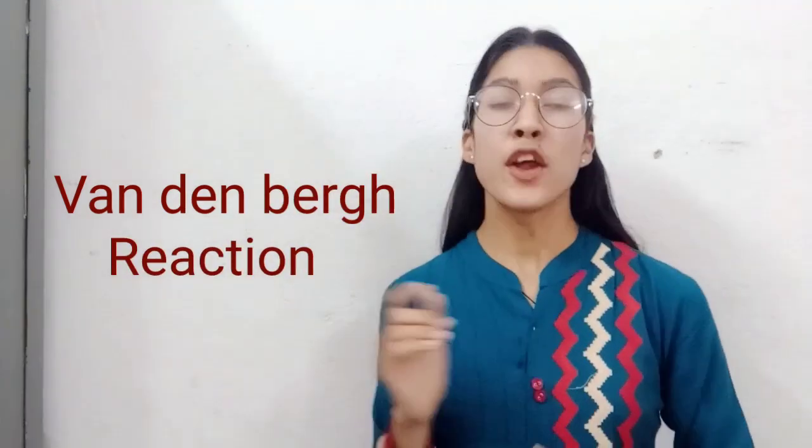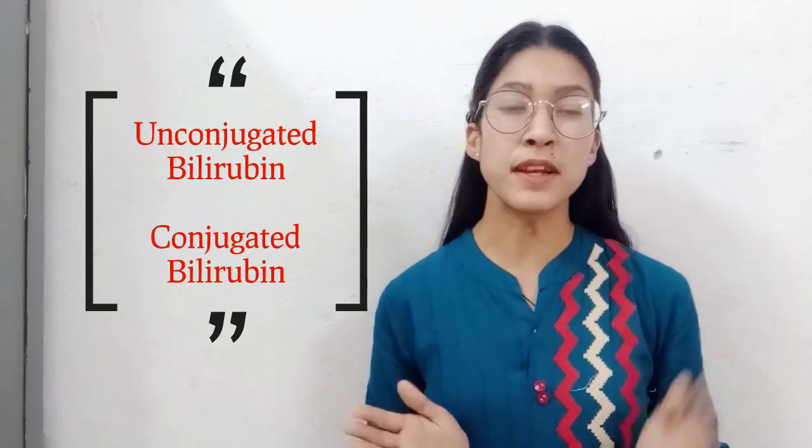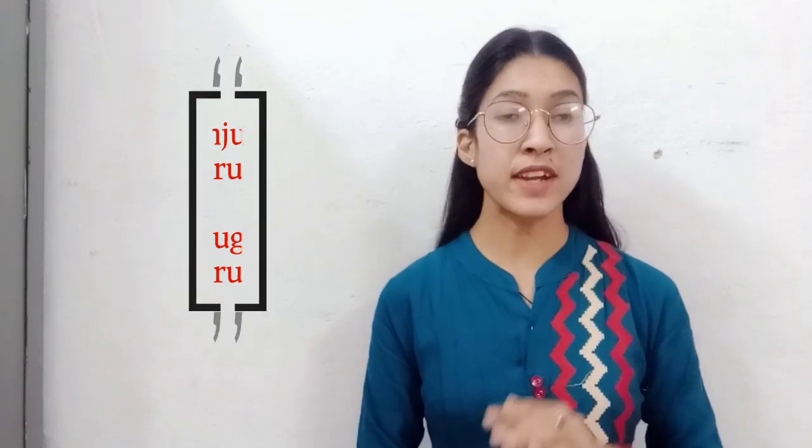Welcome to our YouTube channel. Today we will discuss the Van den Bergh reaction. You have definitely heard about this reaction in physiology, biochemistry, pathology, and sometimes in medicine also, because whenever you study hepatic disorders you will definitely study the Van den Bergh reaction. This reaction is used to differentiate unconjugated bilirubin from conjugated bilirubin, so with this reaction we can diagnose which type of hepatic disorder is present — whether it is pre-hepatic, hepatic, or post-hepatic.